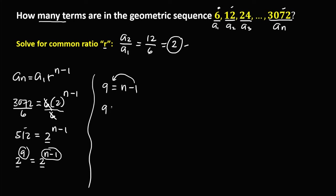Solving for n, transpose the -1 to get n = 9 + 1 = 10. Therefore, this geometric sequence has 10 terms.